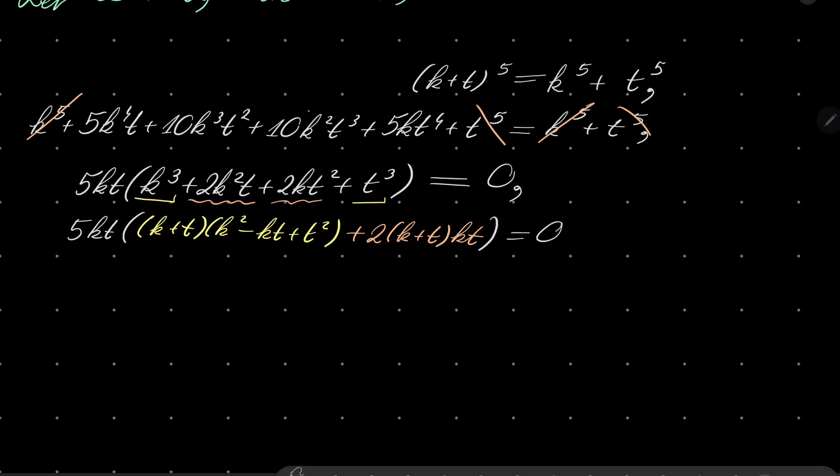Okay, right. And now we have a common factor. So it's 5kt, k plus t. And what we are left with? We are left with k squared plus kt plus t squared equals 0.